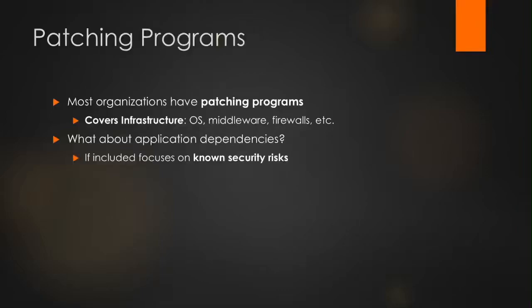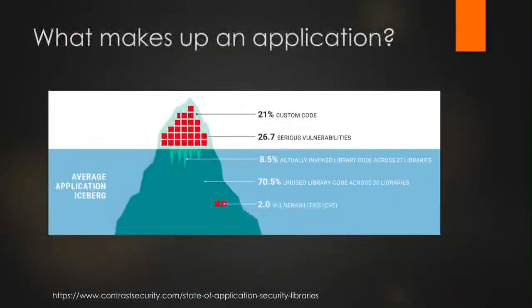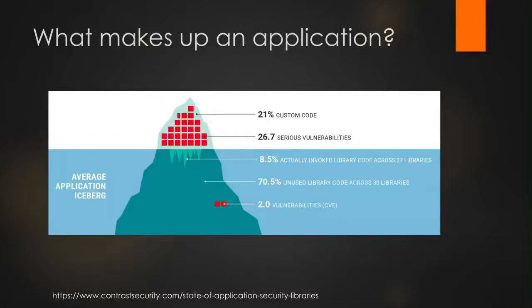This is a slide from Contrast Security. They do runtime application self-protection. The iceberg shows that 21% of your code — at least in the applications they analyzed — is resting on 79% of third-party and commercial libraries. So that's the majority of the code being deployed. Their study also shows that in that 21% of custom code, they find on average 26.7 serious vulnerabilities. That shows we have a long way to go as a security industry with educating and providing better tools, architectures, and secure-by-default frameworks.